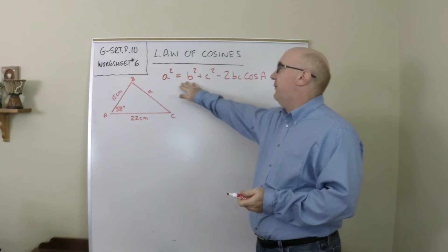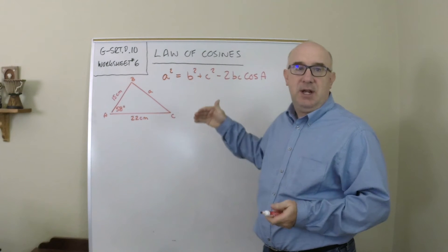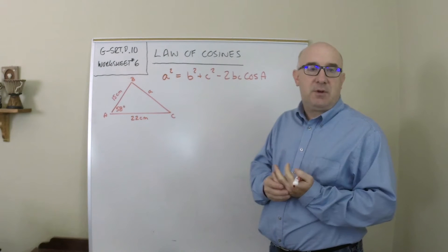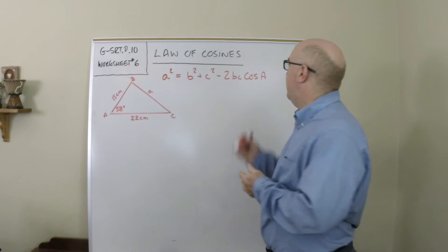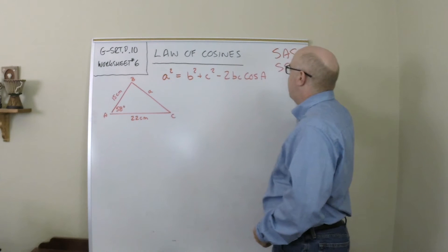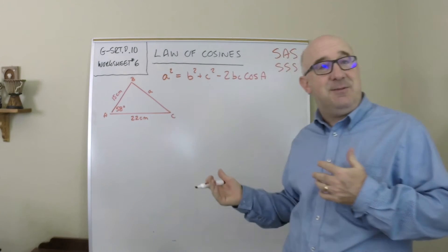Now remember there are three different iterations of the law of cosines and it just depends on what you're given. You always use the law of cosines when you have the cases of side-angle-side or side-side-side because the law of sines doesn't work.